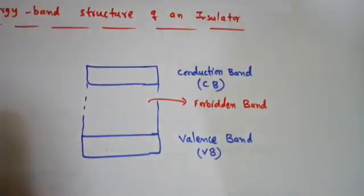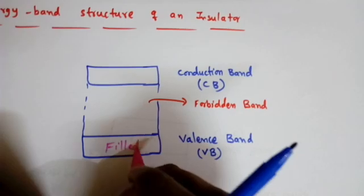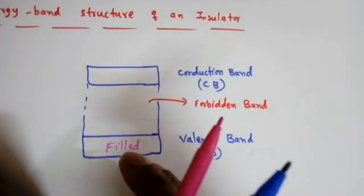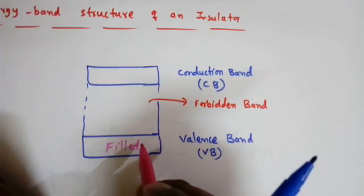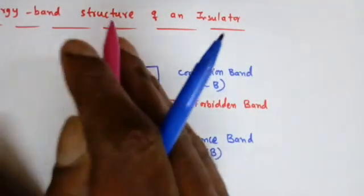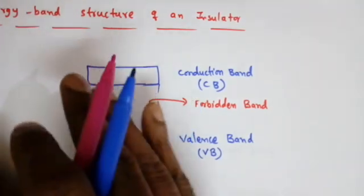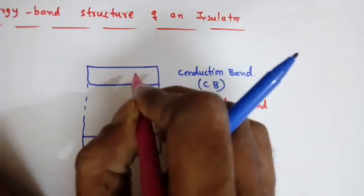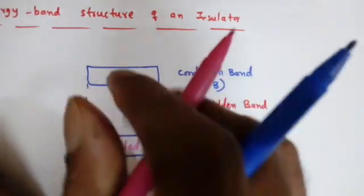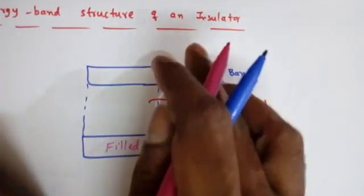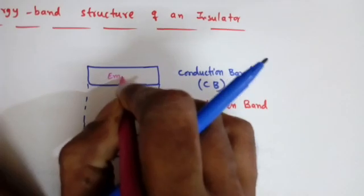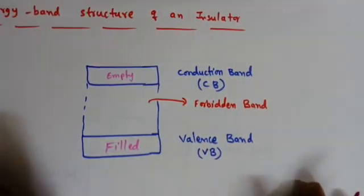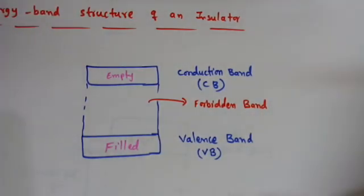The valence band is completely filled with valence electrons, which are bounded electrons — even when an electric field is applied, they are not ready to move. However, when valence electrons move into the conduction band, they become free electrons. Once these electrons are free, they are ready to move when an electric field is applied — that is why it is called the conduction band. Initially, in an insulator or semiconductor, the conduction band is in an empty state with no electrons.